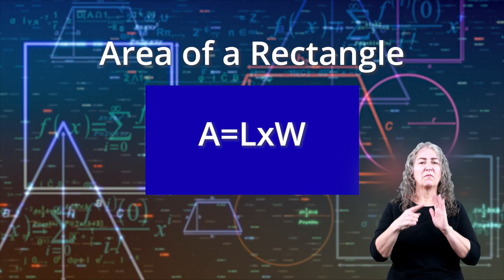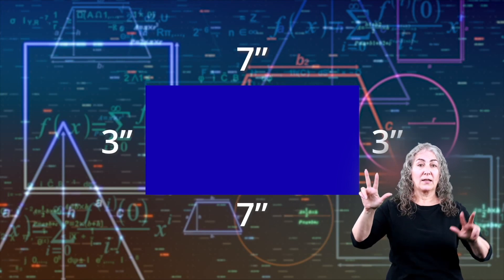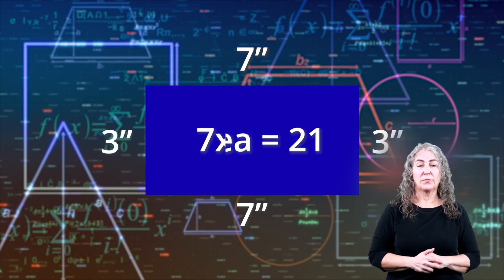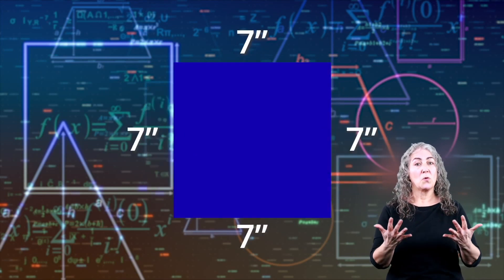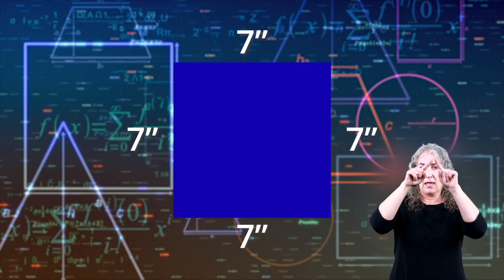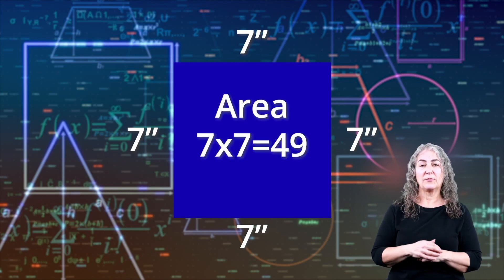Using our above examples, for a rectangle that has a length of 7 inches and a width of 3 inches, the area is 21 because 7 times 3 equals 21. And using our square that has 4 sides that are all 7 inches, the area is 7 times 7, or 49 inches.